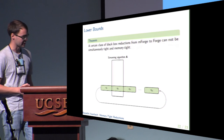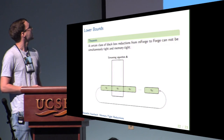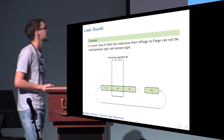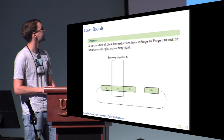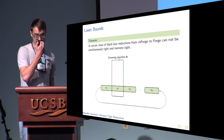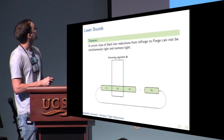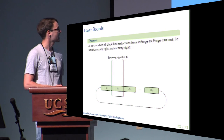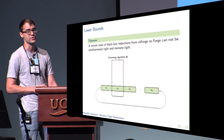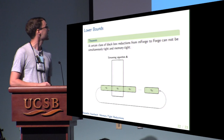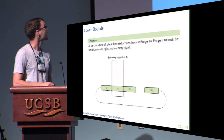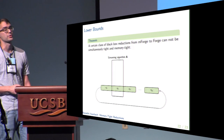The proof uses streaming algorithms — algorithms which have to process a large input but only have small working memory, processing their input as an ordered stream of small chunks and making several passes over those streams. The restrictions on our reductions essentially force them to behave as streaming algorithms, where the single chunks correspond to signing and forgery queries. In this way we use a lower bound on the number of passes a streaming algorithm must make over its input in order to compute certain functions.